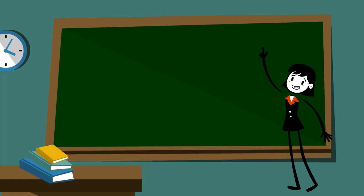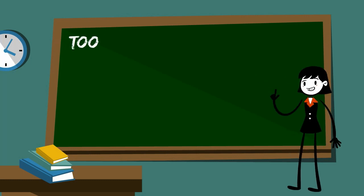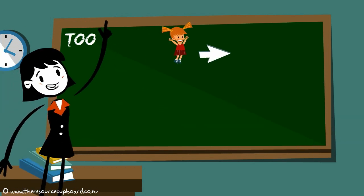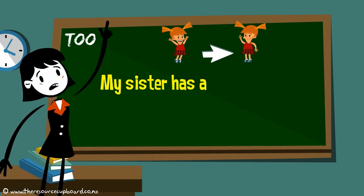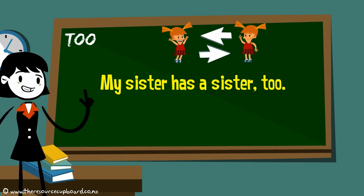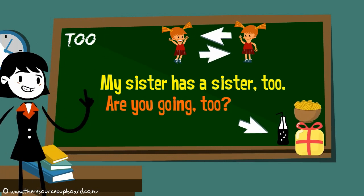Number two, two. The second two is T-O-O. It means also or as well. I have a sister. My sister has a sister too. I'm going to a party. Are you going too?